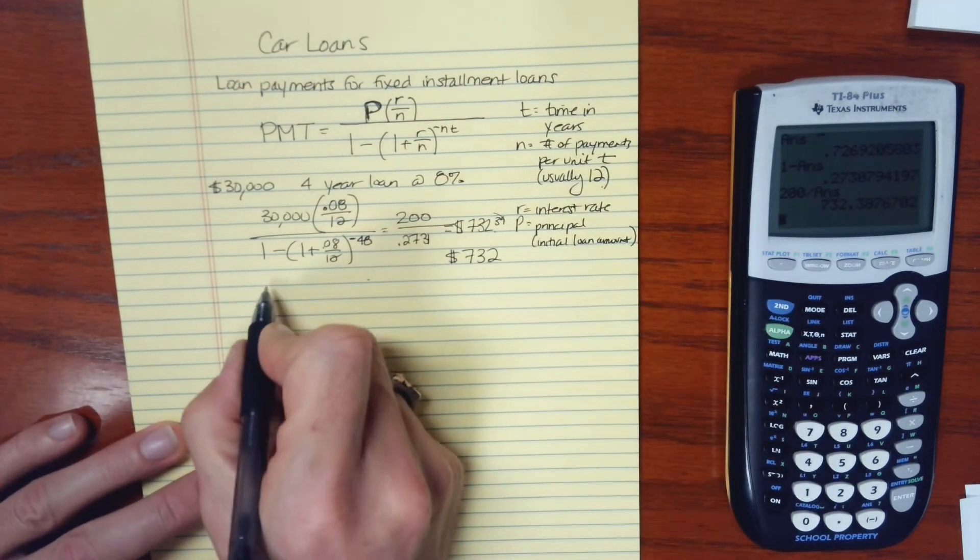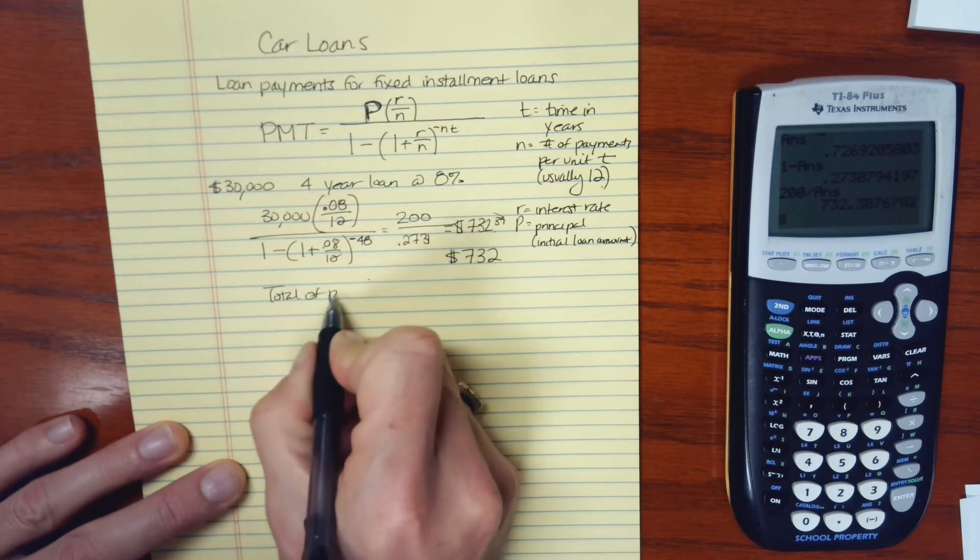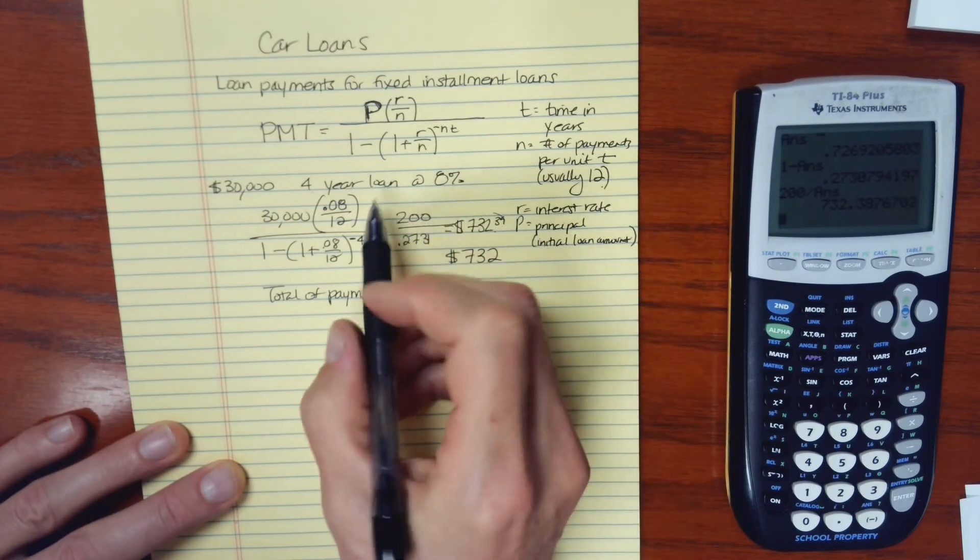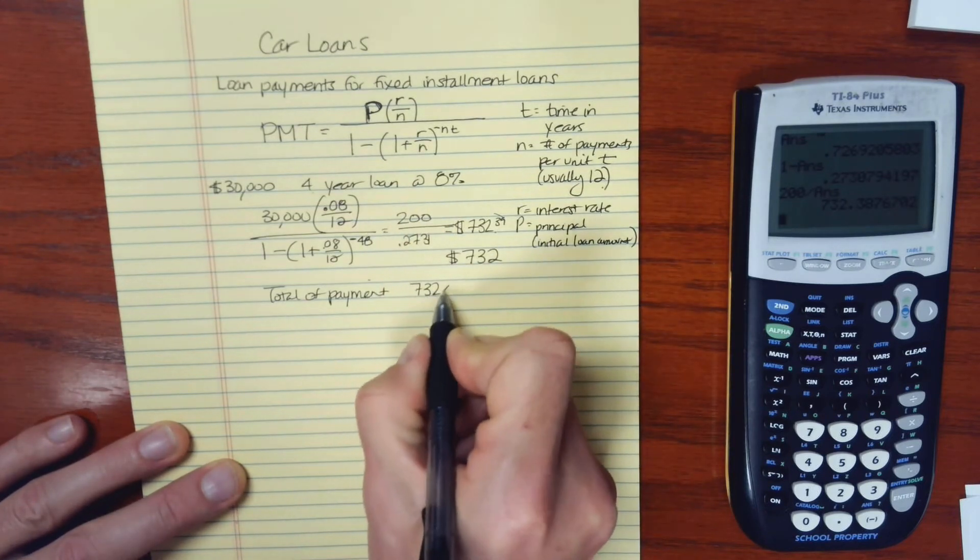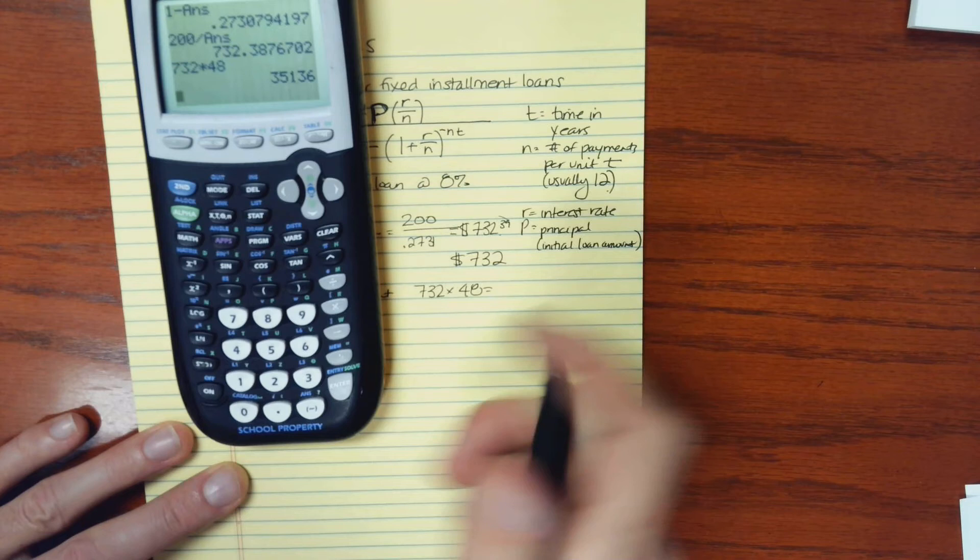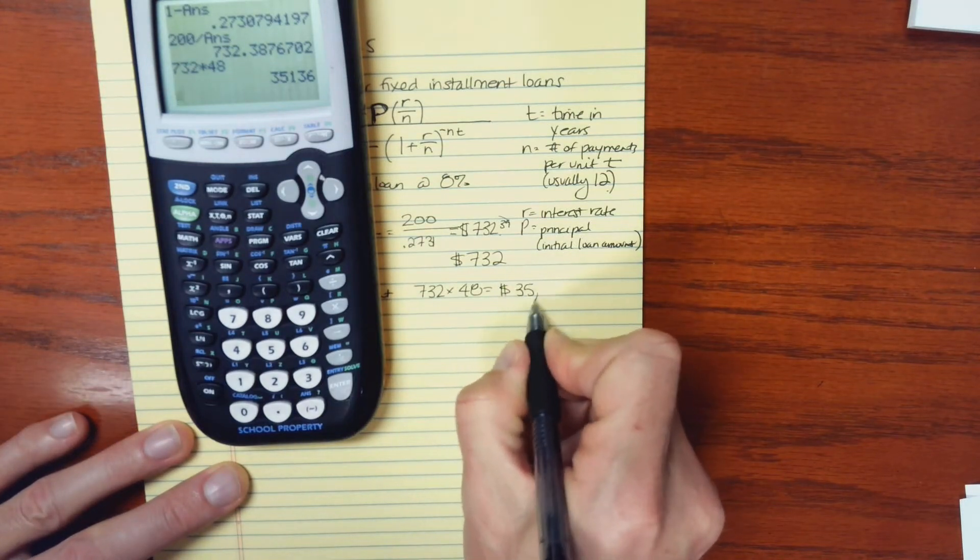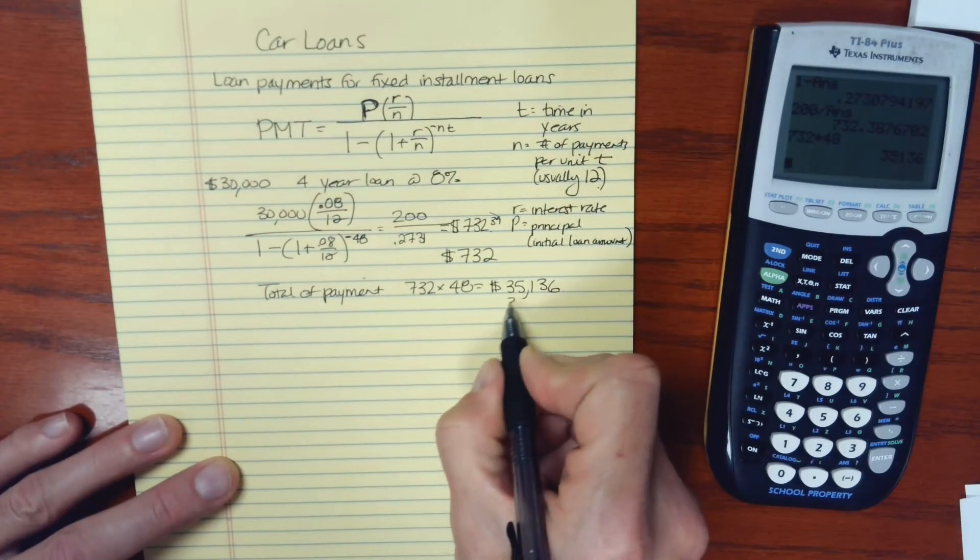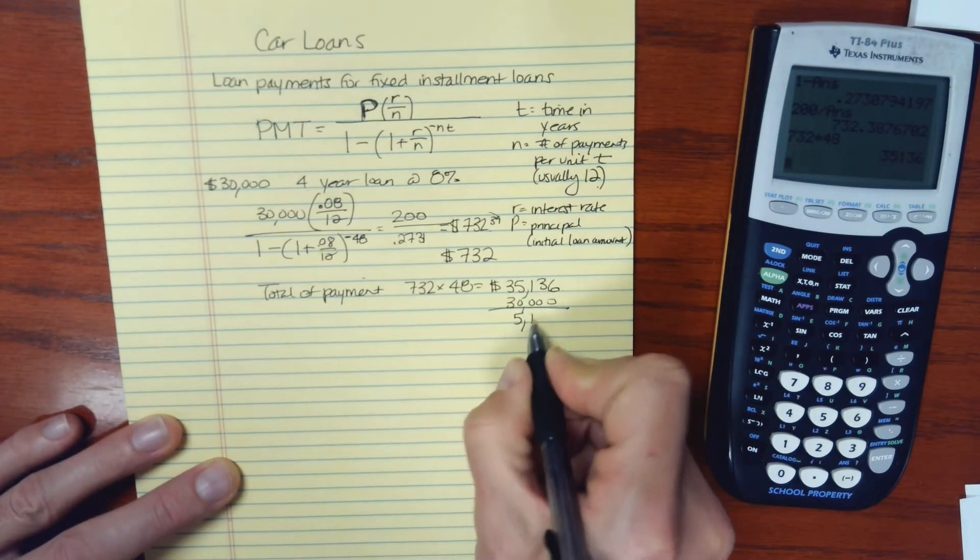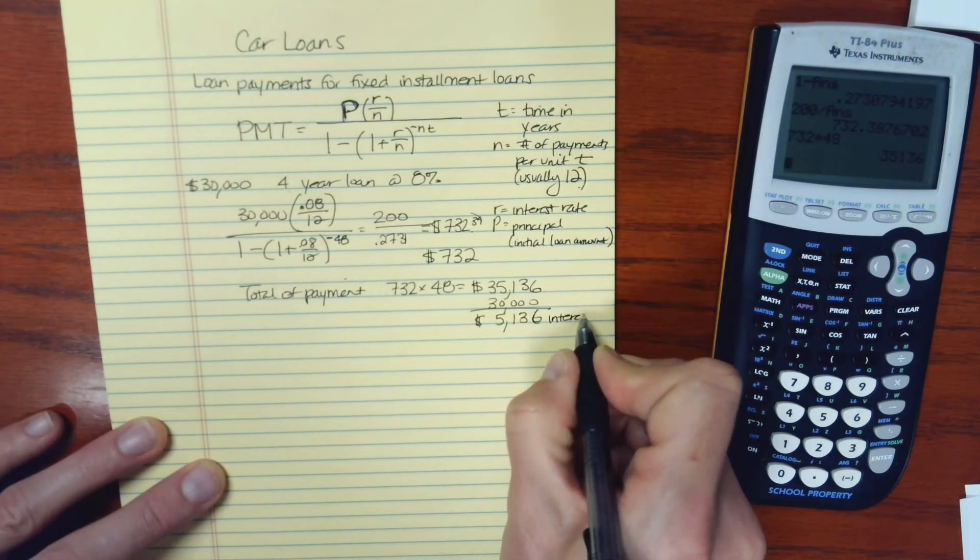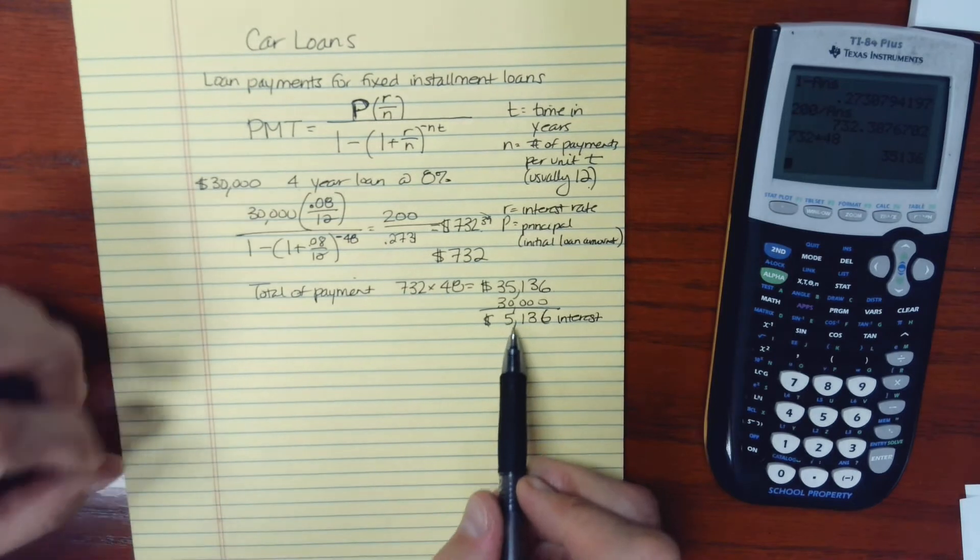Now, with this information, what would be the total of payments? Well, if we're making payments of $732 a month, and we're doing that for four years, we would take 732 times 48. And we'd be making a total of $35,136 in payments. Now, the principal for our loan was $30,000. So the difference between these two amounts, namely the $5,136, that is all interest on the loan over the course of the loan. So over $5,000.